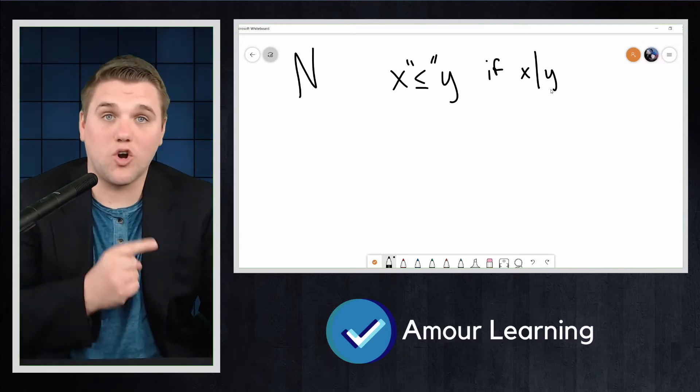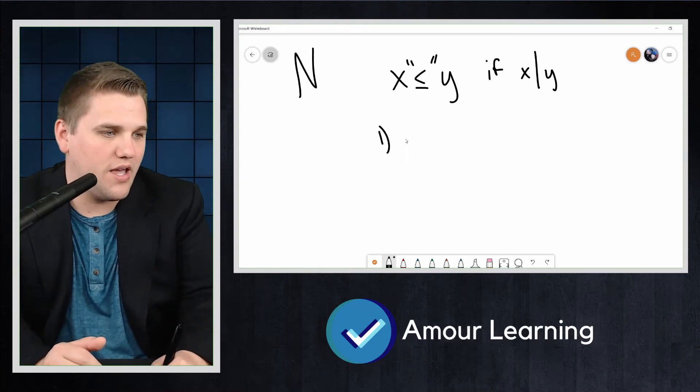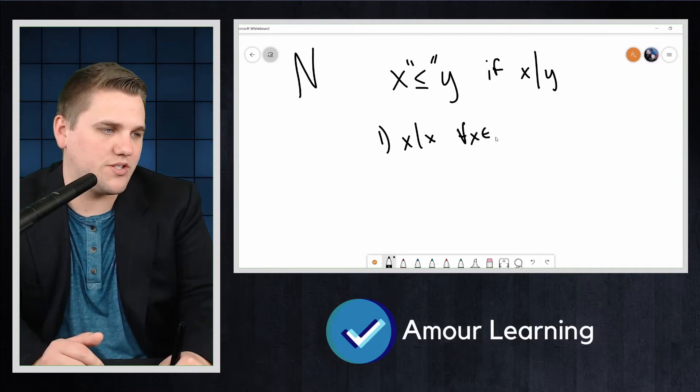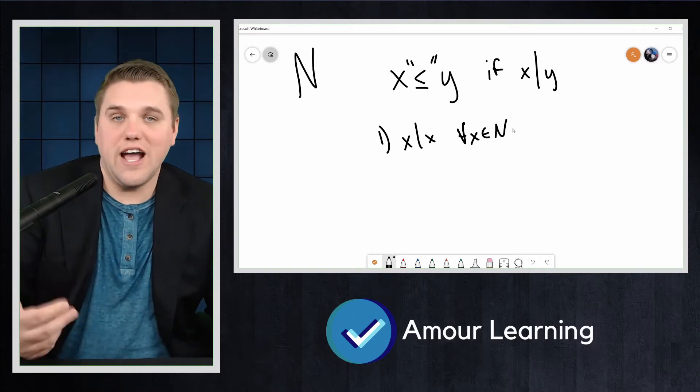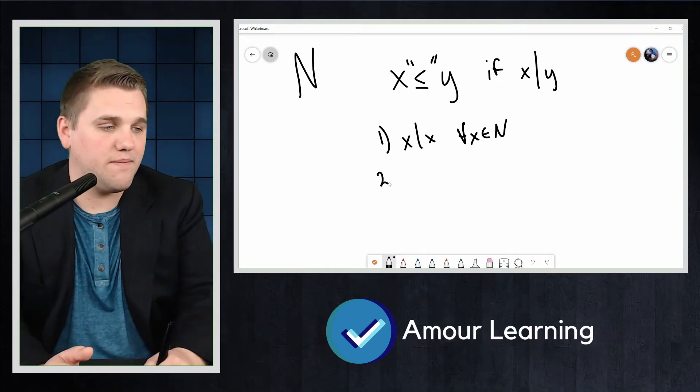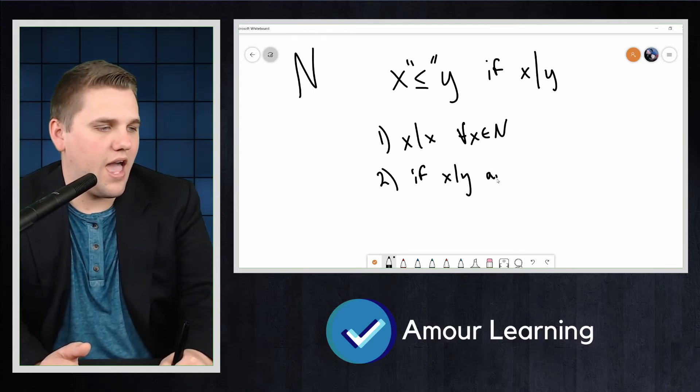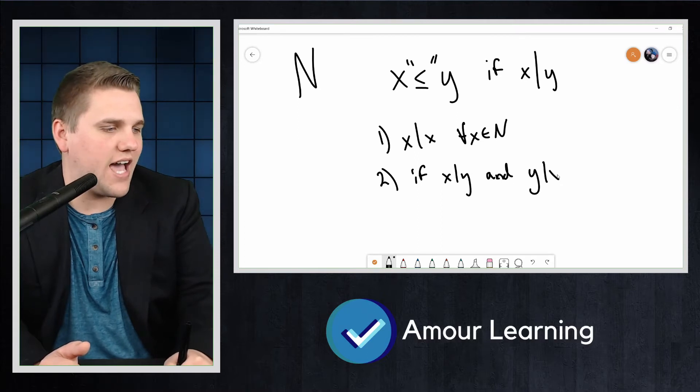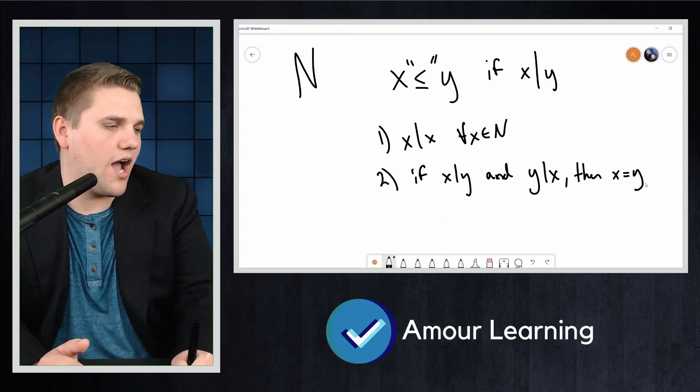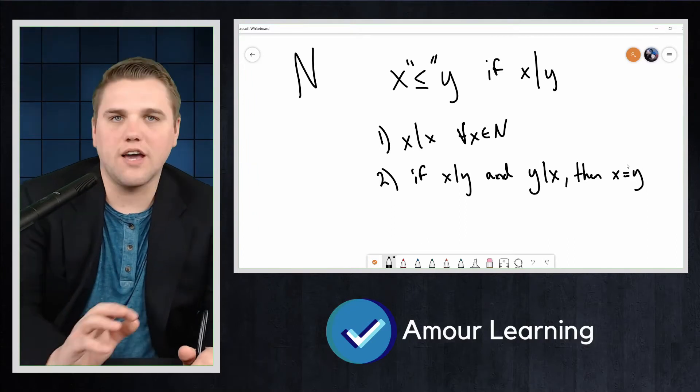This is a partial ordering because, technically, for the reflexive property, X divides X for all X in my natural numbers. Every number divides itself. That's definitely true. And then for the second property, if X divides Y and Y divides X, then X and Y are the same numbers. They're the same natural numbers. This is definitely true.